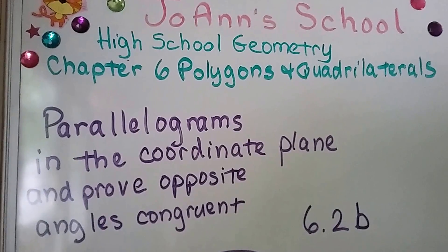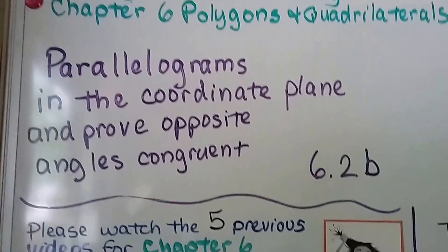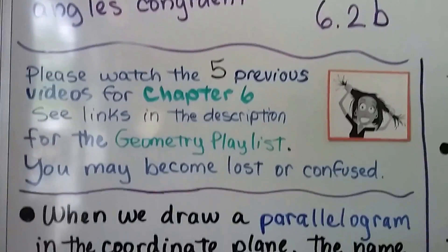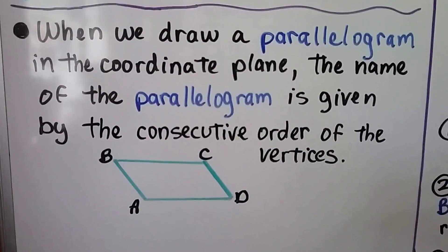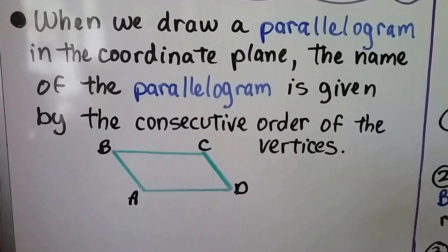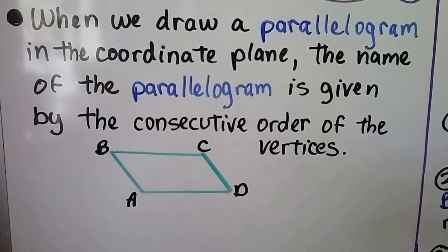Parallelograms in the coordinate plane, and we're going to prove opposite angles congruent. This is 6.2b. We have five previous videos that are in the geometry playlist for this chapter. When we draw a parallelogram in the coordinate plane, the name of the parallelogram is given by the consecutive order of the vertices.